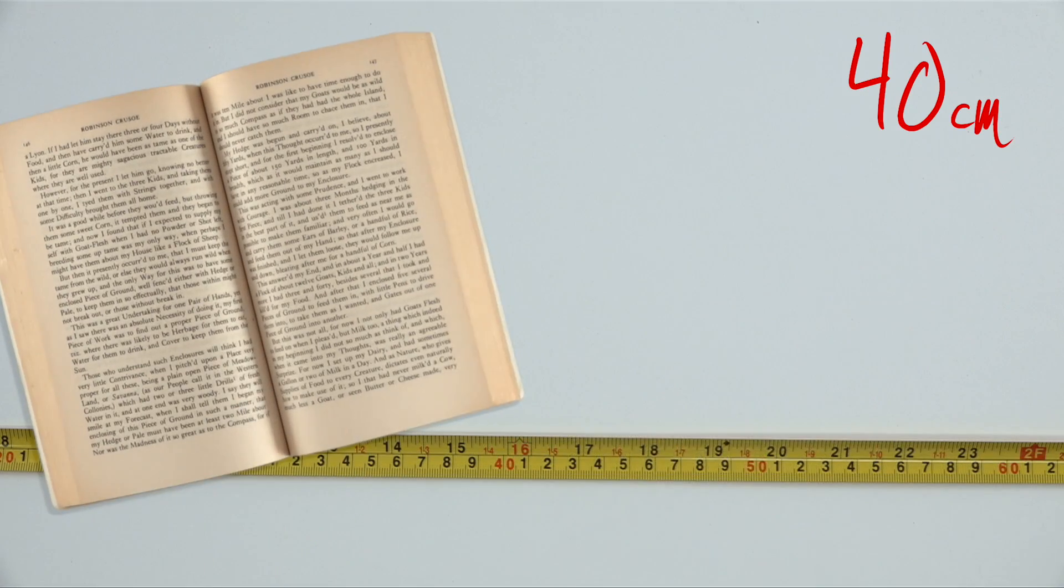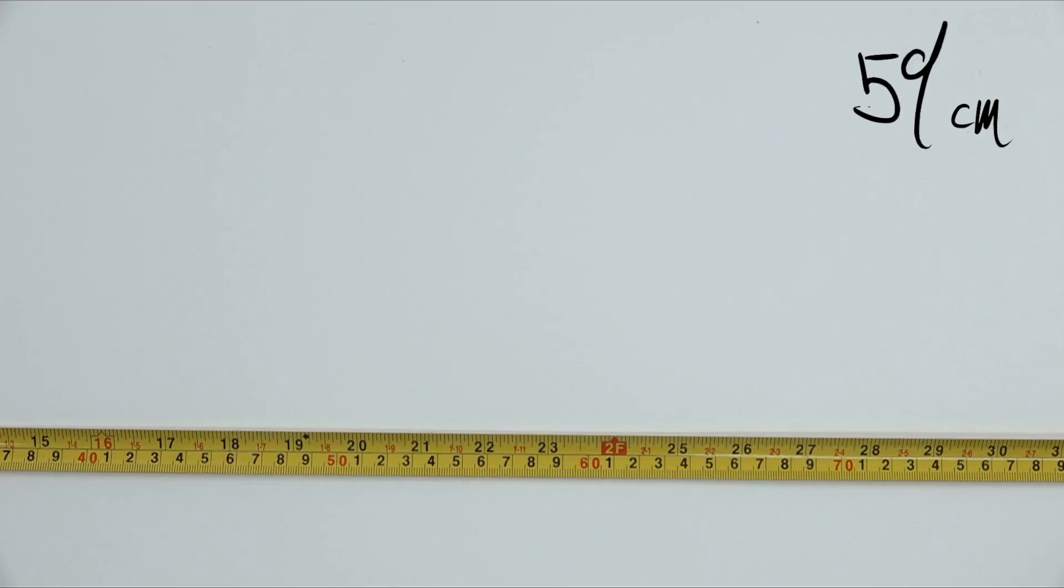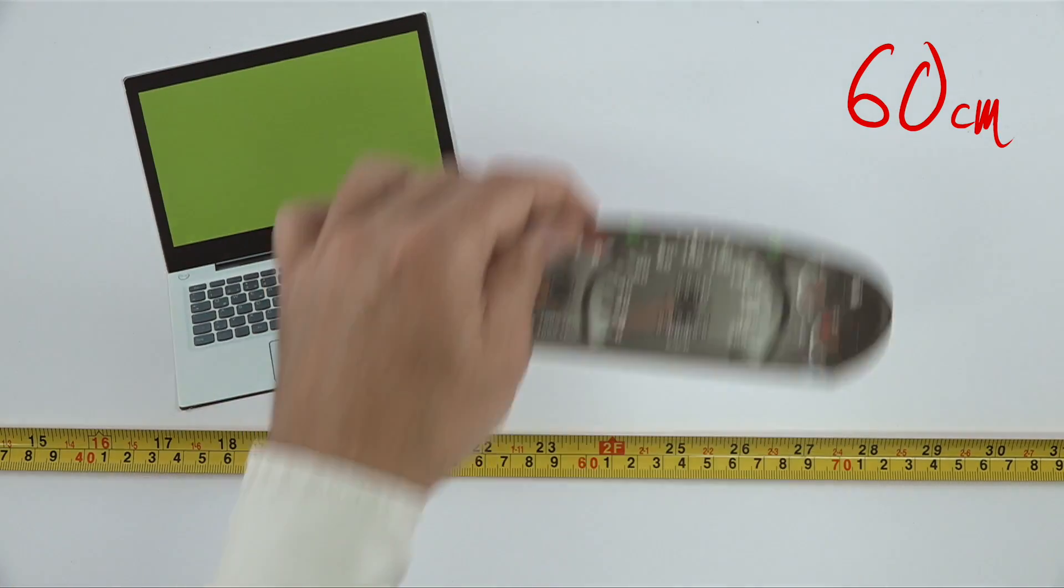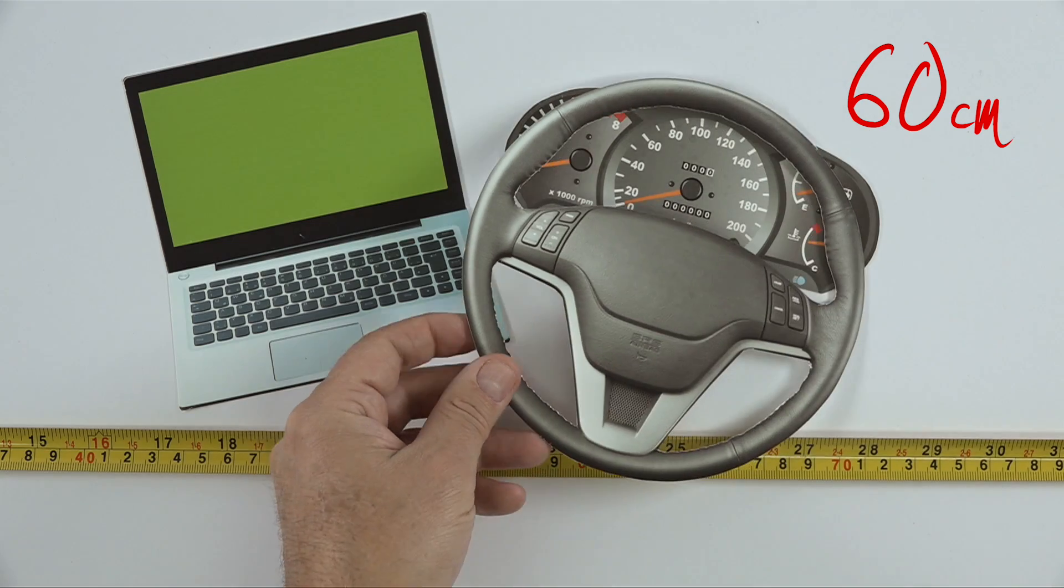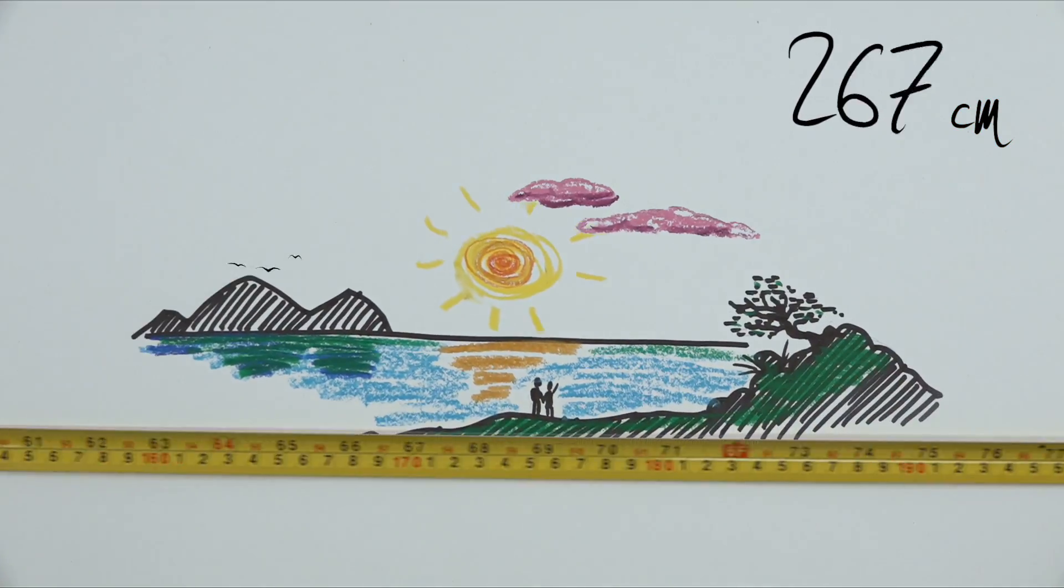We're talking about 40 centimeters for reading books, your phone, or a tablet, 60 centimeters to get the preferred distance for working on the computer or checking your car's dashboard, and of course, long distances for your daily life.